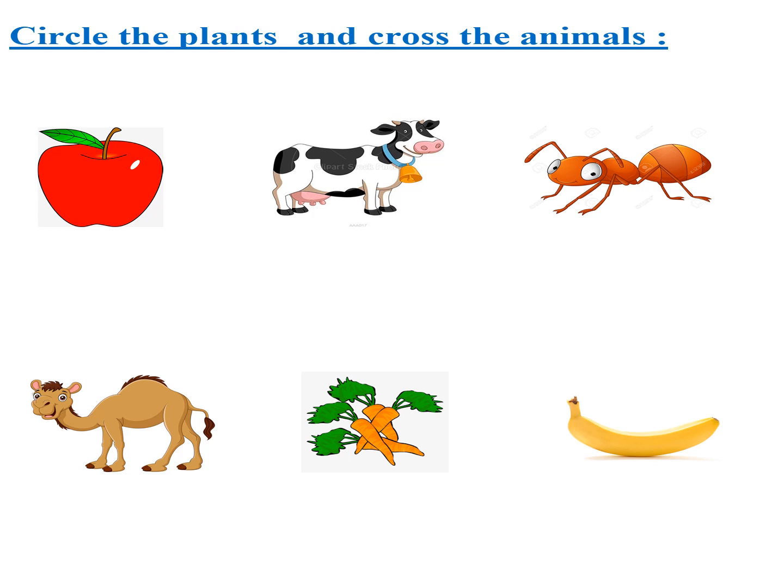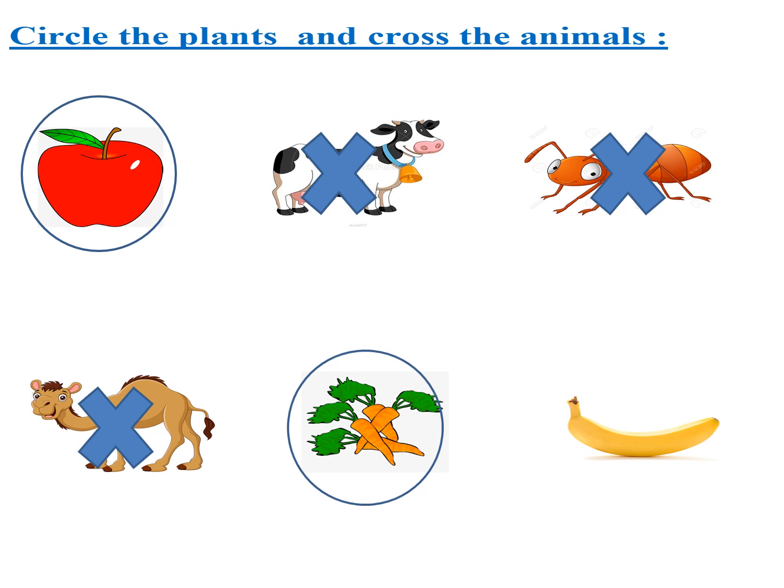Here we have to circle the plants and cross the animals. What do you think about the first one? It's an apple. This one is an animal, and this is an animal. This is an animal. The carrot is a plant. The banana is a plant.